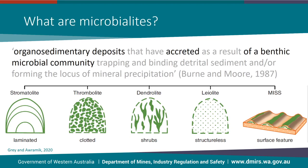Microbialites can be divided into subsets based on their overall morphology. Stromatolites, the first and probably most common described subset, are microbial build-ups that have a laminated or layered structure. Thrombolites, the second subset, have an internal clotted structure at the macro scale. Dendrolites have a shrub-like appearance, branching in a dendritic fashion as their name suggests. Leolites might seem a bit odd as a subset when by definition they are structureless, but they can be easily recognised in the field by their microbial bed forms, their shape, and the context of their growth.